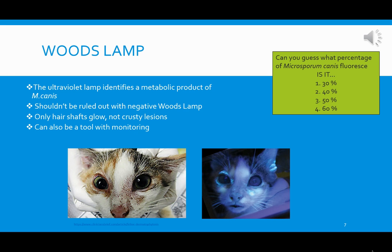Pop quiz: what percentage of Microsporum canis fluoresces? Is it thirty percent, forty percent, fifty percent, or sixty percent? The answer is only fifty percent — and that's why we talk about not using this as our only means of diagnosis. When we see a negative Woods lamp, there is still a possibility that fifty percent of these organisms will not fluoresce.